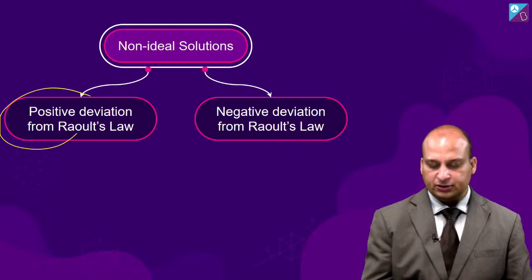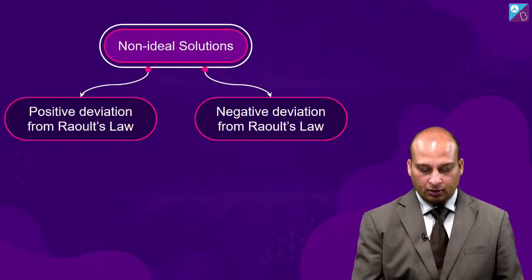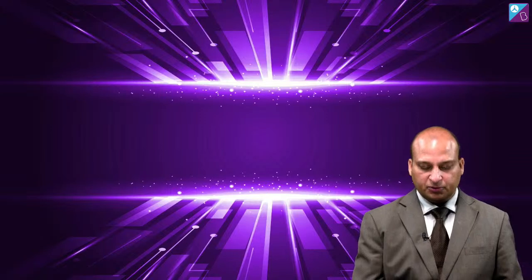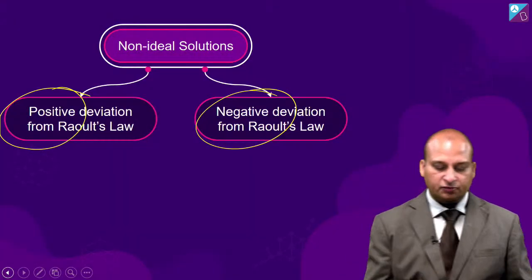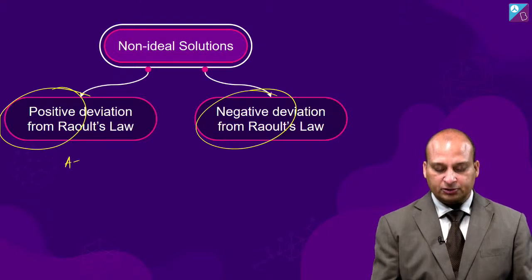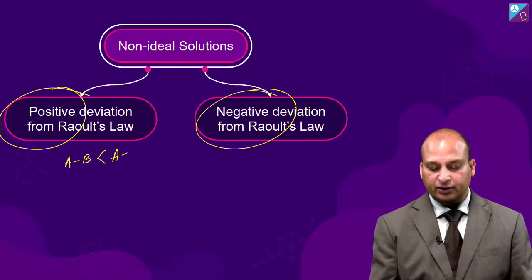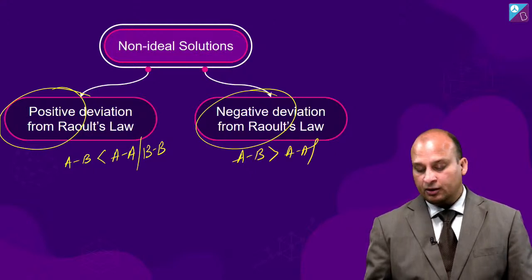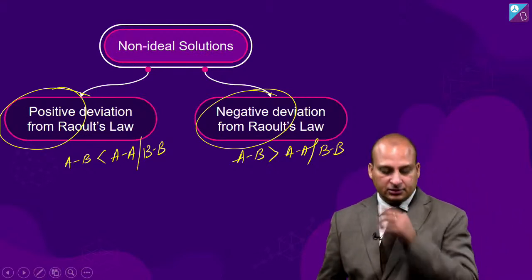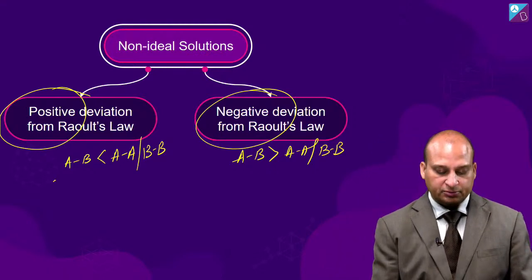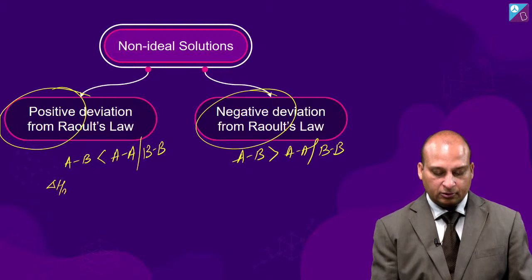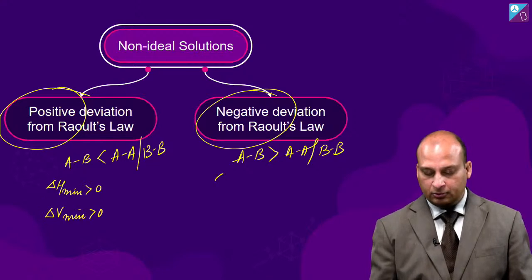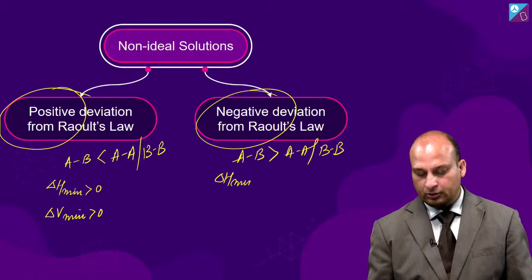For non-ideal solutions with positive deviation: the A-B force of attraction is weaker compared to A-A or B-B interactions, and ΔH_mix > 0. For negative deviation: the A-B force of attraction is greater than A-A or B-B, and ΔH_mix < 0. Please memorize the examples given in NCERT for both types.